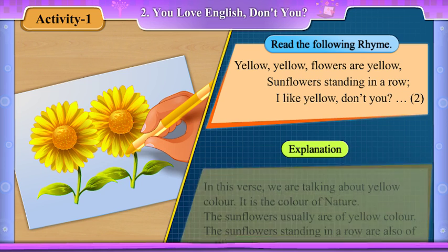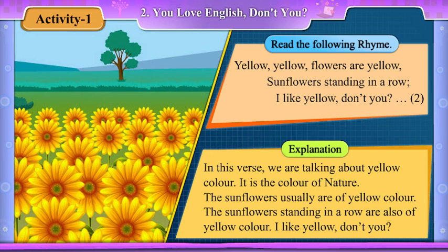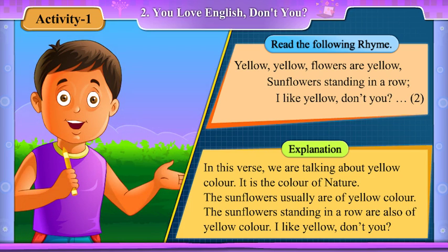Explanation. In this verse, we are talking about yellow colour. It is the colour of nature. The sunflowers usually are of yellow colour. The sunflowers standing in a row are also of yellow colour. I like yellow, don't you?